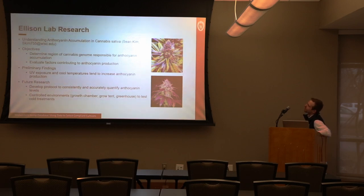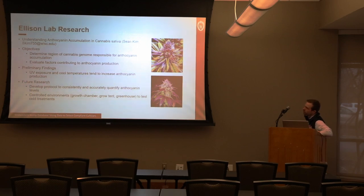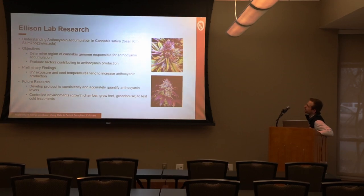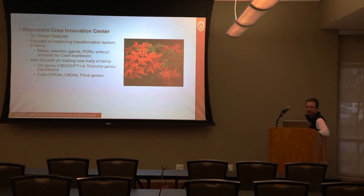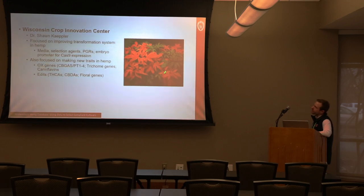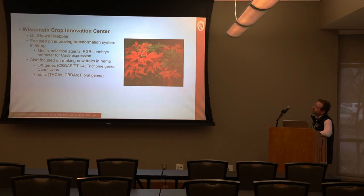The lab is also studying anthocyanin production. Master's student Sean Kim is examining purple pigmentation in cannabis, investigating what specific stressors — cold and light — influence its production, as pink and purple pigmentation in cannabis strains is in high demand in the cannabis market. Additionally, the Wisconsin Crop Innovation Center was the first group in the world to perform a successful transformation of genetics into hemp, inserting the crimson gene into the cannabis plant to produce a striking red color — the first evidence of successful hemp transformation.